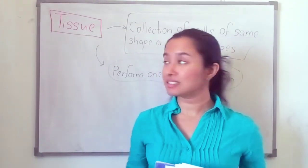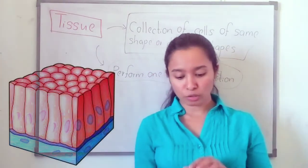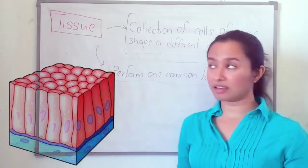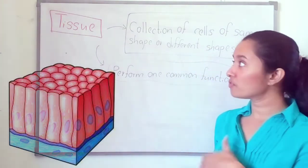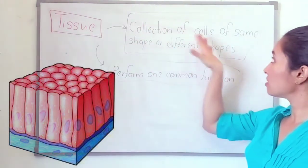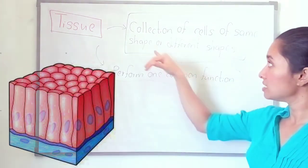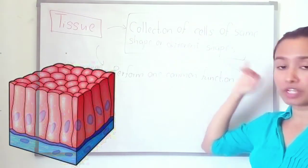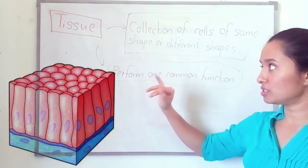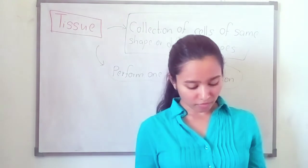The second organizational level is tissue. Tissue is made up of a group of cells organized for a specific function. There are two main features of a tissue. First, the tissue is made up of a collection of cells of the same shape or different shapes. Second, it performs one common function. So one tissue performs one common function.